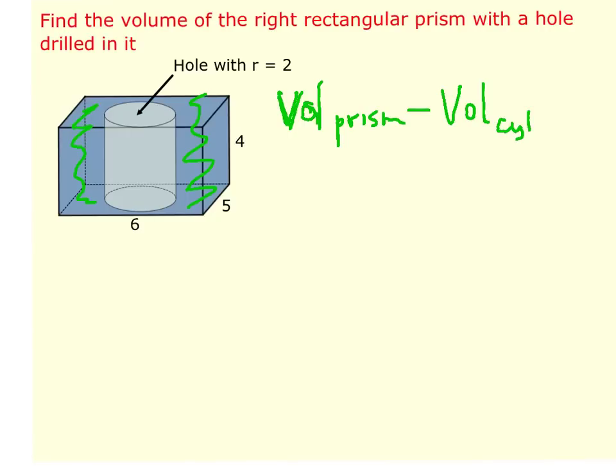So volume of the prism, let's start with that. The prism is a rectangular prism, which means that the bases are rectangles. So in order to find the volume of a rectangular prism, I'm going to take base times height of the rectangle times the height of the prism.